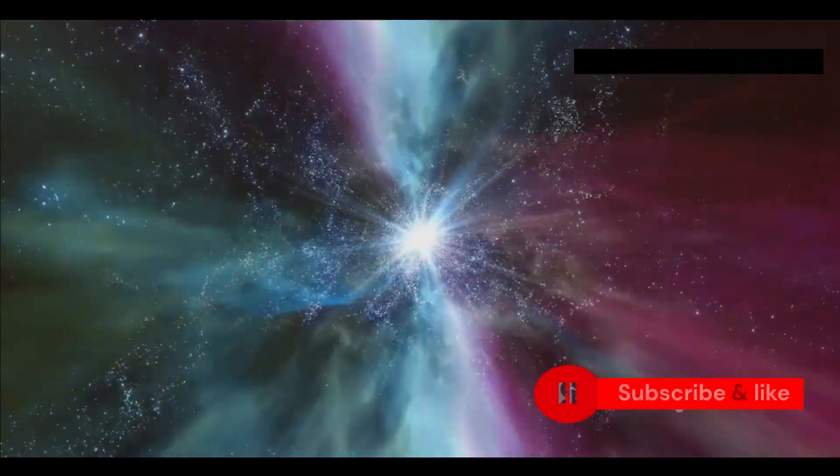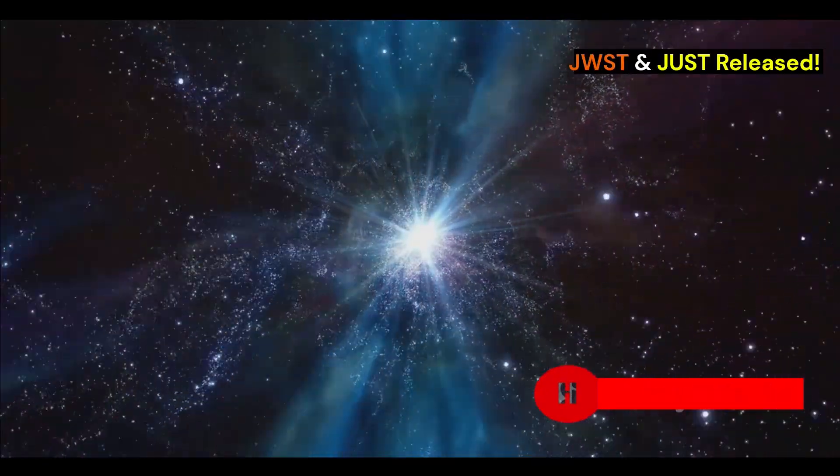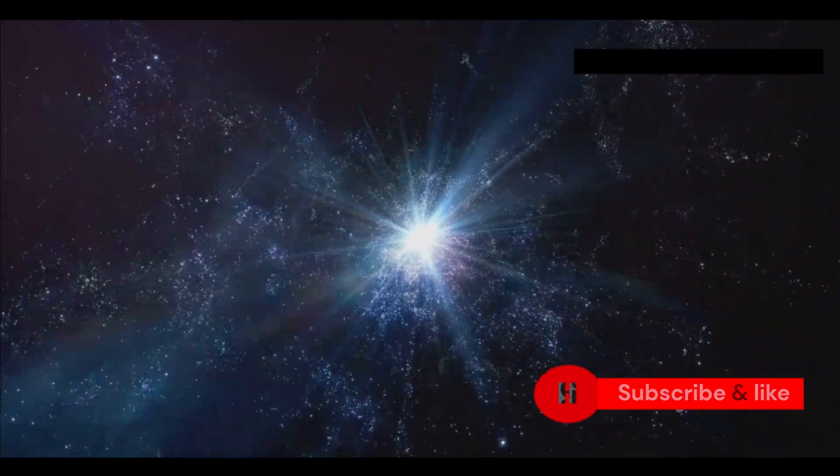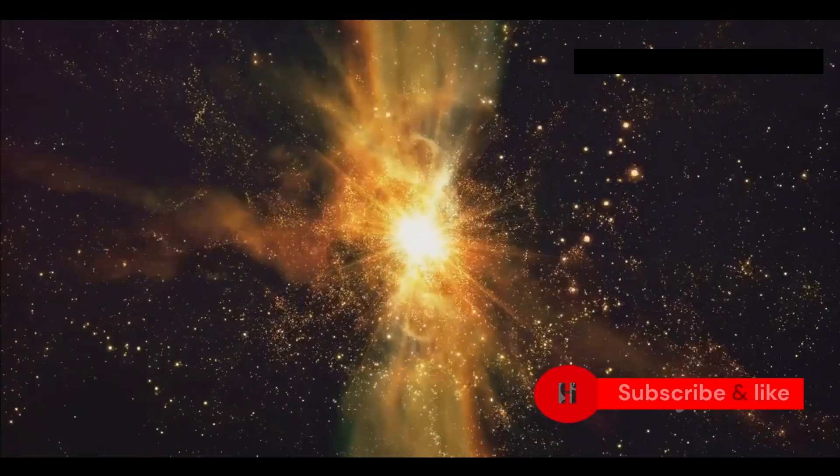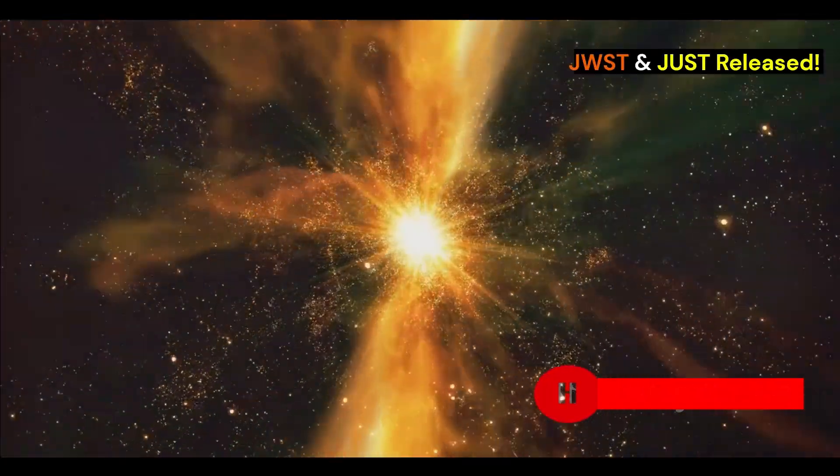Right in the middle of the nebula is what's left of the star, called a white dwarf. This small, dense and super hot object is what's left over after a star like our sun runs out of fuel.